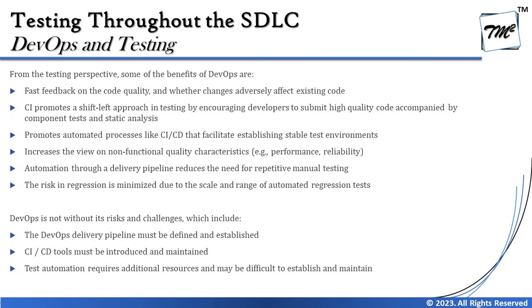Automation through a delivery pipeline reduces the need for repetitive manual testing. The more automation there is, the less the manual repetitive effort will be and the faster the process will be. In DevOps and agile processes, more and more automation is looked forward to. Additionally, the risk of regression is minimized due to the scale and range of automated regression tests. The more frequently regression tests take place, the less the risk of failure; in DevOps, because we are tightly working between code and test executions, there is a good reduction in regression risk.